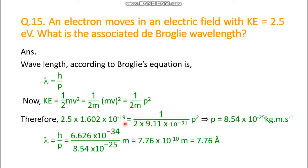With the momentum known and Planck's constant also known, dividing Planck's constant by the momentum gives the wavelength in meters. The final value is 7.76 × 10⁻¹⁰ meter. Since 10⁻¹⁰ meter is 1 angstrom, this can also be written as 7.76 angstrom. This is the de Broglie wavelength.